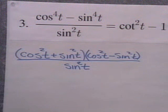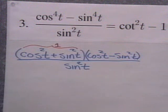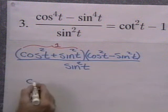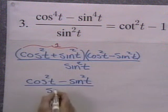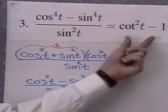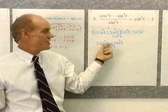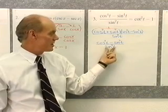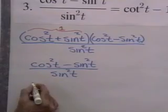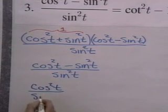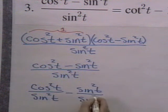I notice that cosine squared t plus sine squared t is my original Pythagorean identity, which is just equal to 1. So I have 1 times cosine squared minus sine squared, which is just cosine squared t minus sine squared t in the numerator, and sine squared t in the denominator. I keep an eye on the other side — cotangent squared t minus 1. I see I have cosine squared t and sine squared t, all divided by sine squared. I'm going to write the sine squared underneath each term separately.